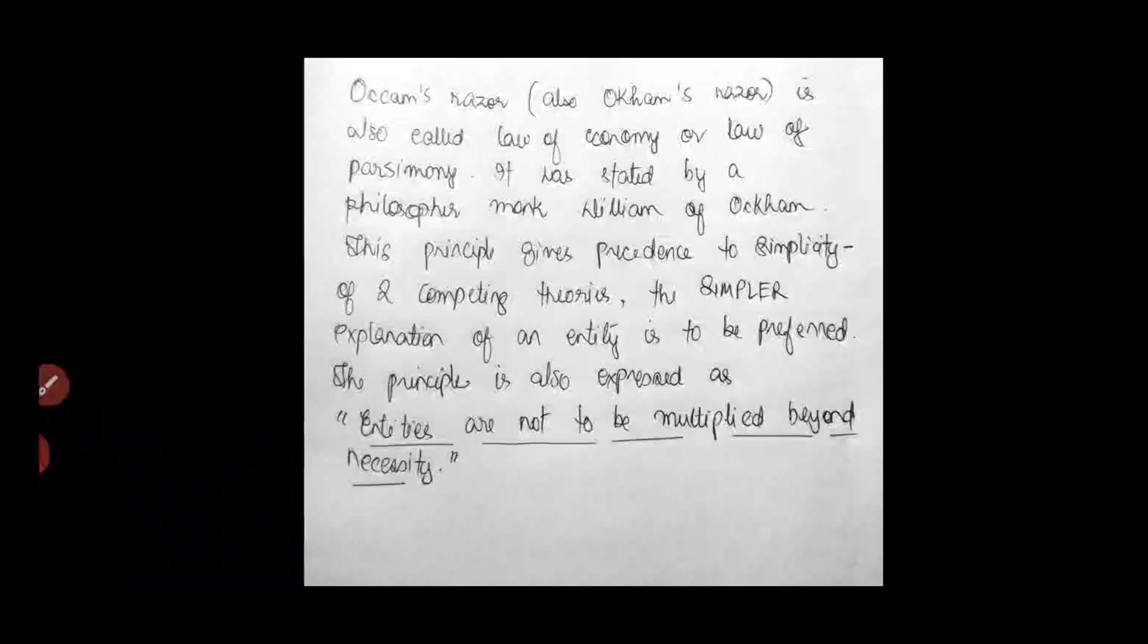Of two competing theories, the simpler explanation of an entity is to be preferred. So let us say there are two competing theories. You have to go with the one which is the most simplest. The most simplest of the explanations. The principle is also expressed as entities are not to be multiplied beyond necessity. So maybe in the exam, they might give you this principle. Entities are not to be multiplied beyond necessity. And you may be asked to choose which one of the characteristics it belongs to.